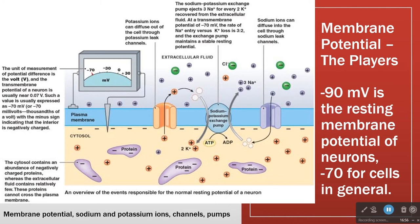Putting all this together — the sodium-potassium pump, leaky potassium channels, leaky sodium channels — we end up with a resting membrane potential of about minus 70. That number is worth knowing: minus 70 is the resting membrane potential for cells in general.